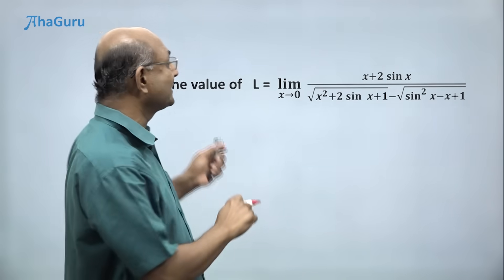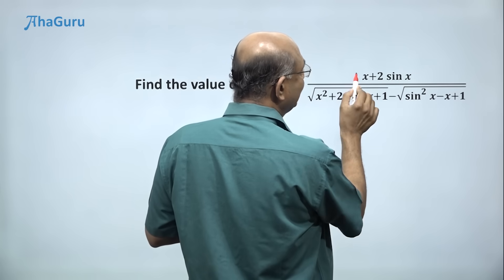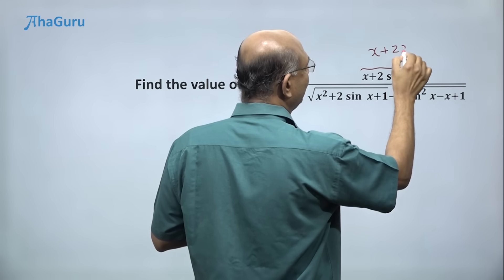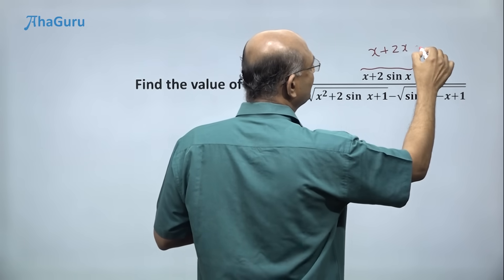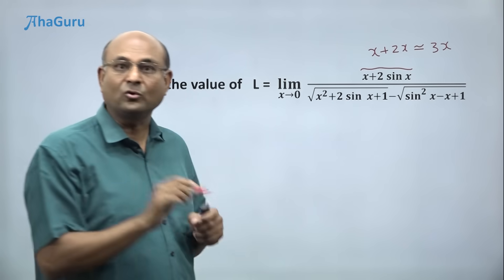Let us see how to solve this question in 15 seconds. So the numerator is x plus 2 sin x, which you can write as x plus 2x, right? Sin x is approximately x. So this is equal to 3x. So the numerator is equal to 3x.